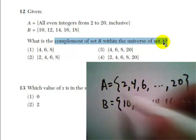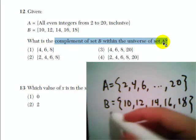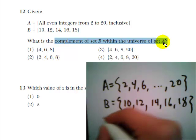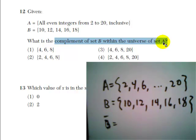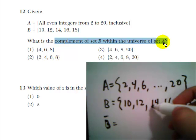Okay, so if we take set A as all the numbers that are possible, and set B as 10, 12, 14, 16, 18, the complement of B is a set of those numbers that are in A, but not in B.